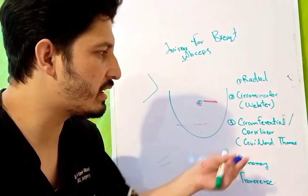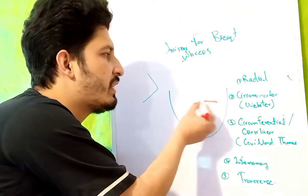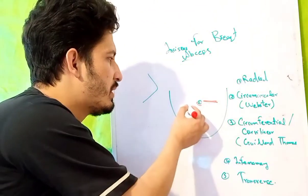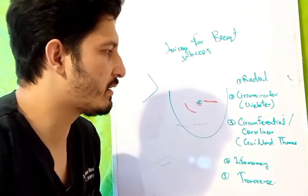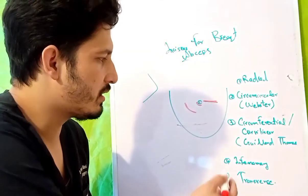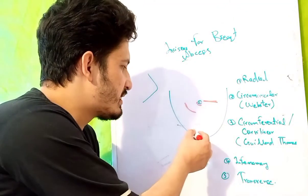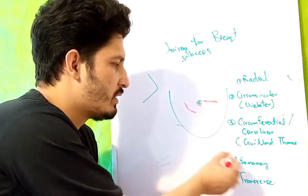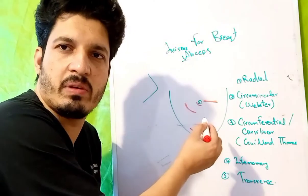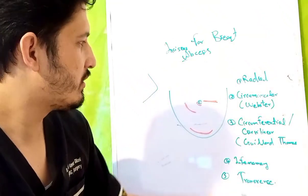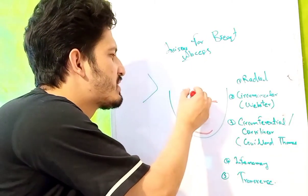The next incision is the circumferential incision, also known as the curvilinear incision or the Gillard Thomas incision. It is a curvilinear incision but is away from the nipple-areola complex. Then we have the inframammary incision, placed at the inframammary fold, and its shape will be curvilinear.